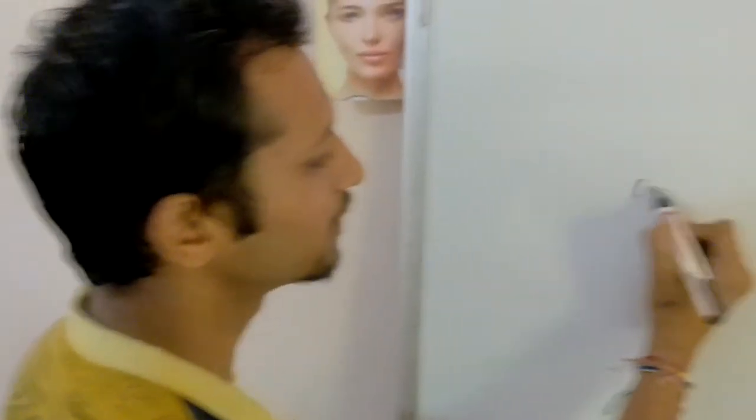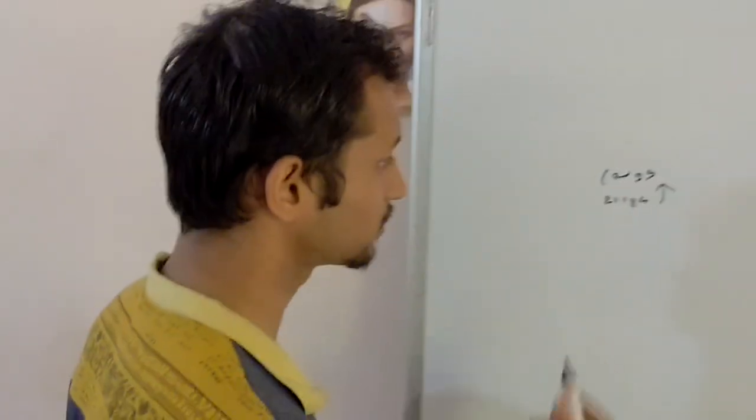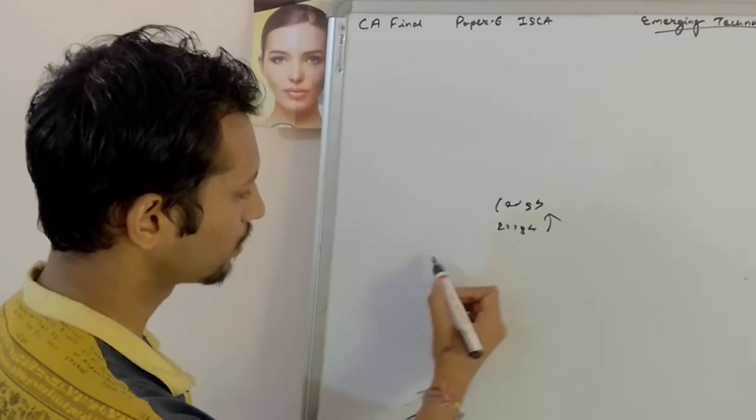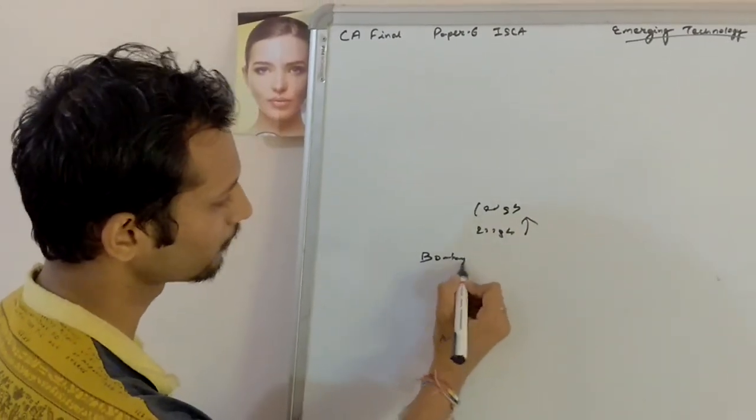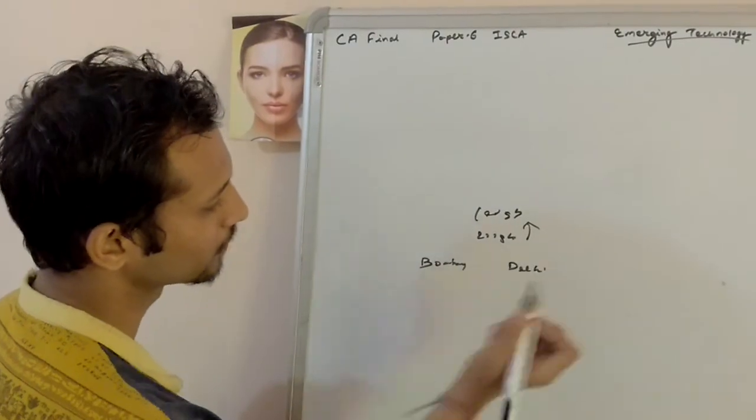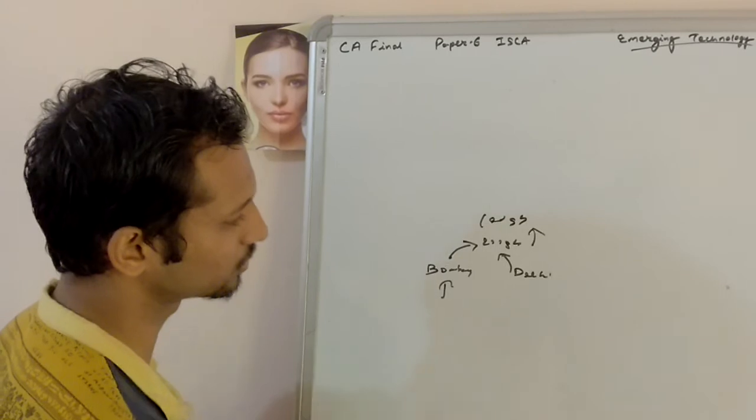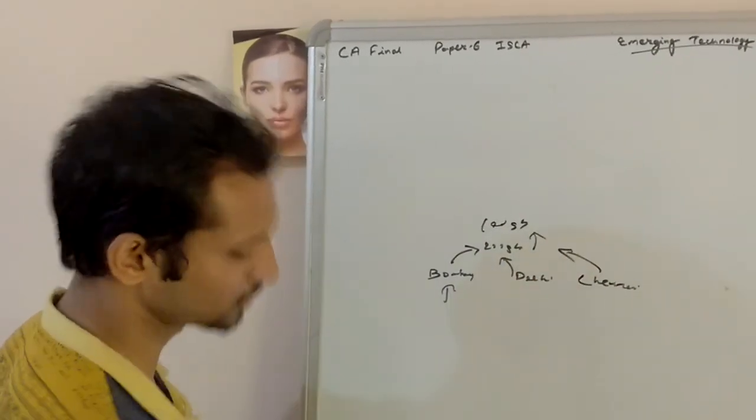The first thing is that it gives a huge space for you. What you want to store, 100 GB of data, 200 GB of data, that can also be stored in your data. This is the first facility. Then when you want it, you can use it. You are in Bombay or Delhi, you can access it here and there. If someone is in Chennai, you can also access it.